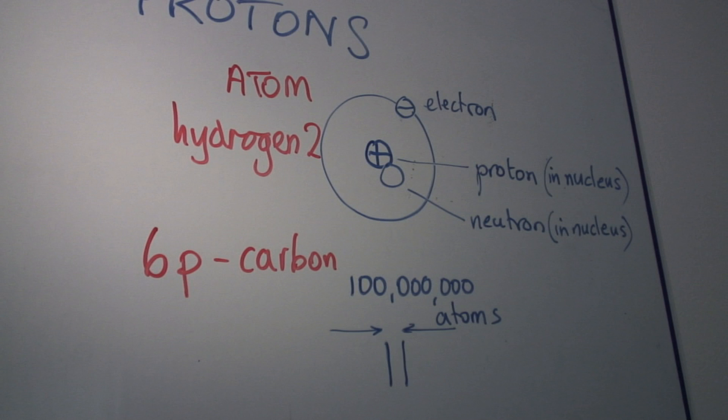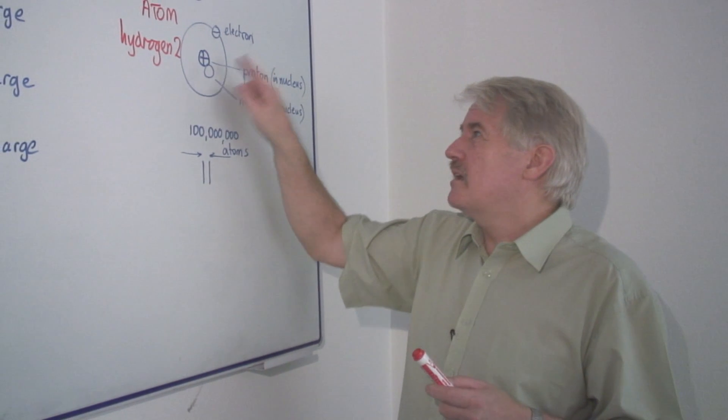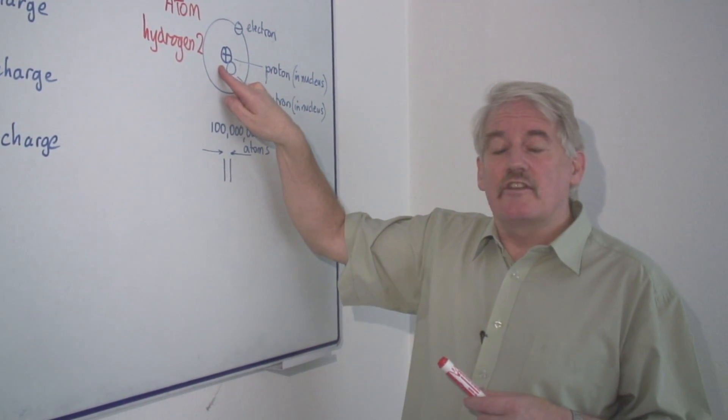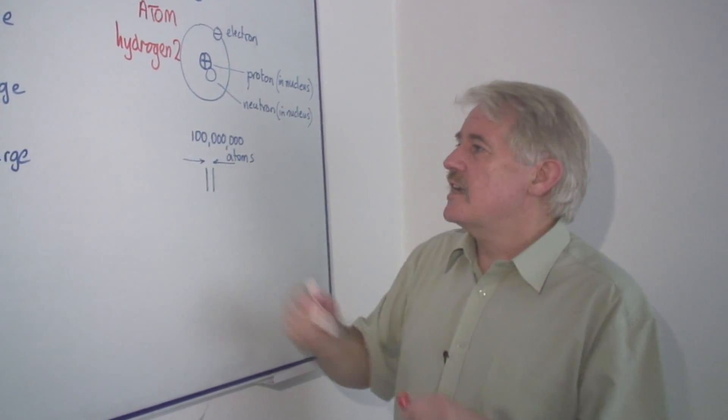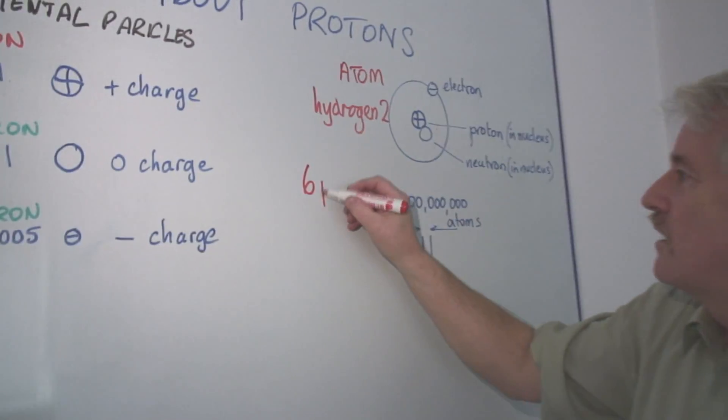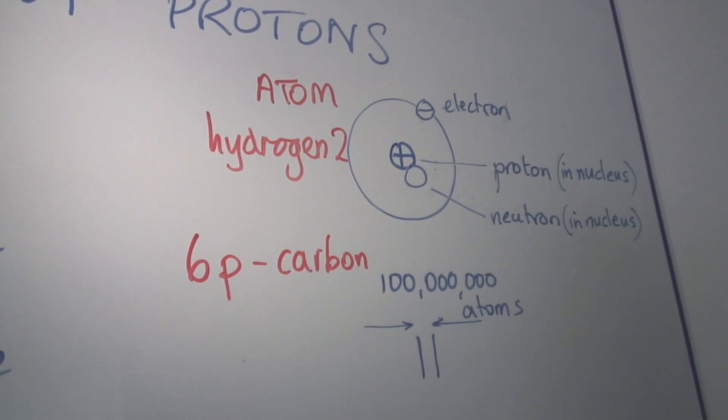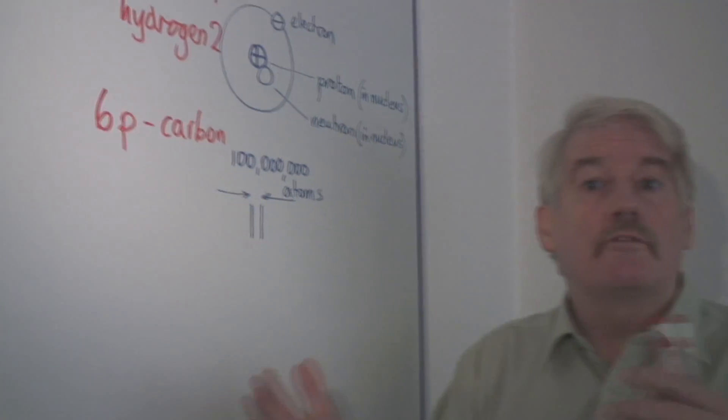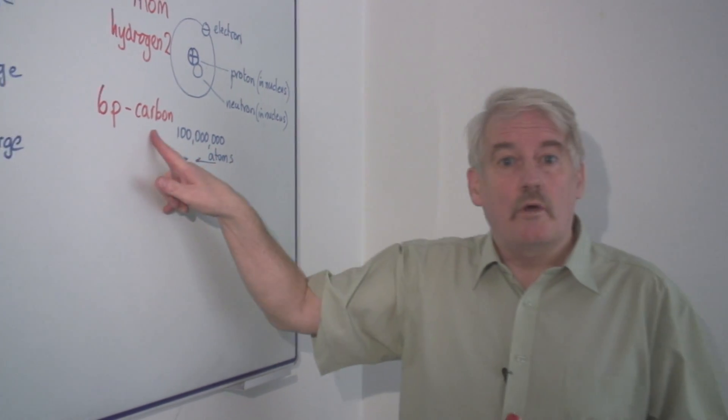You can also have ordinary hydrogen, which doesn't have this neutron. But that gives you an idea of how big the proton is. It's the number of protons in here that dictate what type of material it is. If there are six protons, then it will be carbon. So the atom will be carbon. And we know carbon because soot is carbon. Diamond is carbon. Different forms. So if it's got six protons, then it's carbon, and so on.